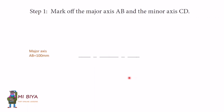We are going to cover about eight steps to complete this unit. In Step 1, you need to mark off the major axis, which is A-B, and the minor axis, which is C-D. As you can see, A to B is equal to 100 millimeters — that is our major axis.